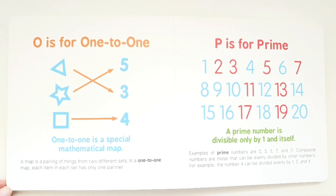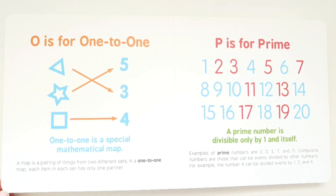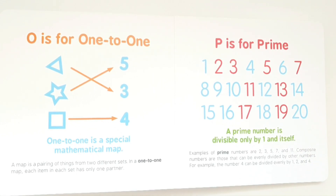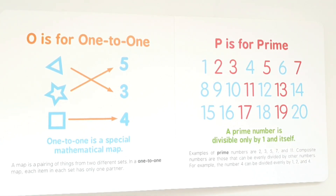O is for one-to-one. One-to-one is a special mathematical map. A map is a pairing of things from two different sets. In a one-to-one map, each item in each set has only one partner.